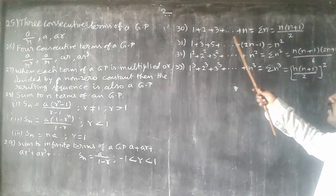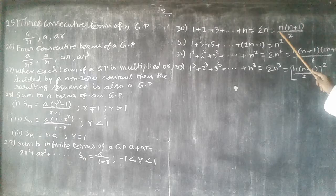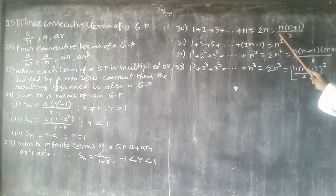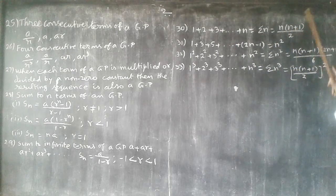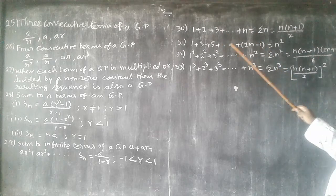30th. 1 plus 2 plus 3 plus up to n. Sigma n, the summation is equal to n into n plus 1 by 2. That is natural numbers.